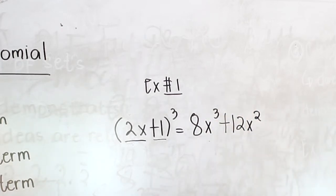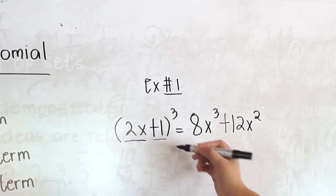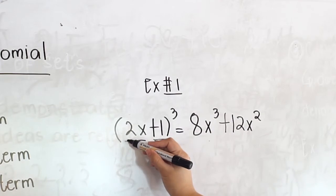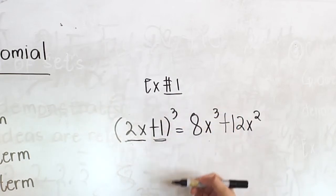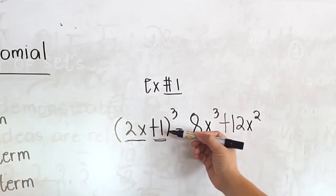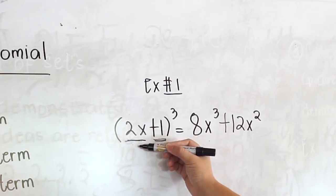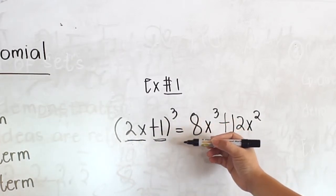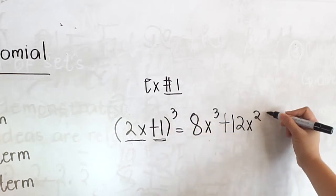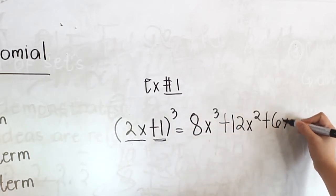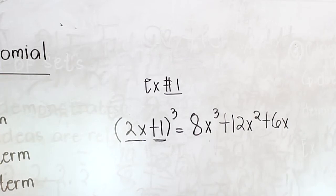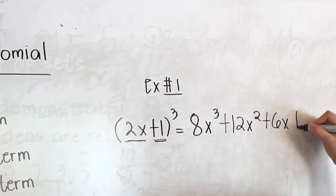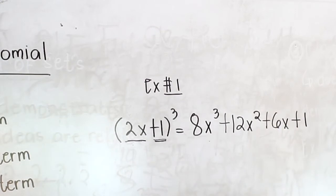Next, square the second term times the first term, then times 3. So 1 squared is 1, times 2x is 2x, and times 3 is 6x. The last rule is cube the second term, which is 1. So 1 cubed is 1. And we have our final answer.